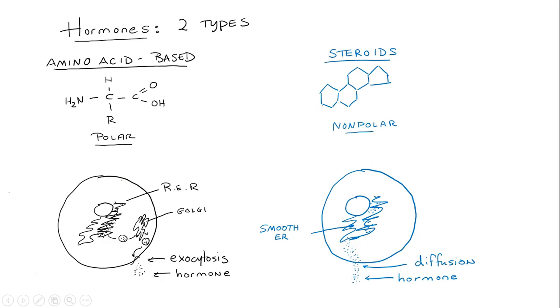And so these are two different types of secretion. So the hormones are going to be secreted by their glands and then they are going to travel through the bloodstream to their target cells. And whether a hormone is polar or nonpolar determines its mechanism of action at the target cell.